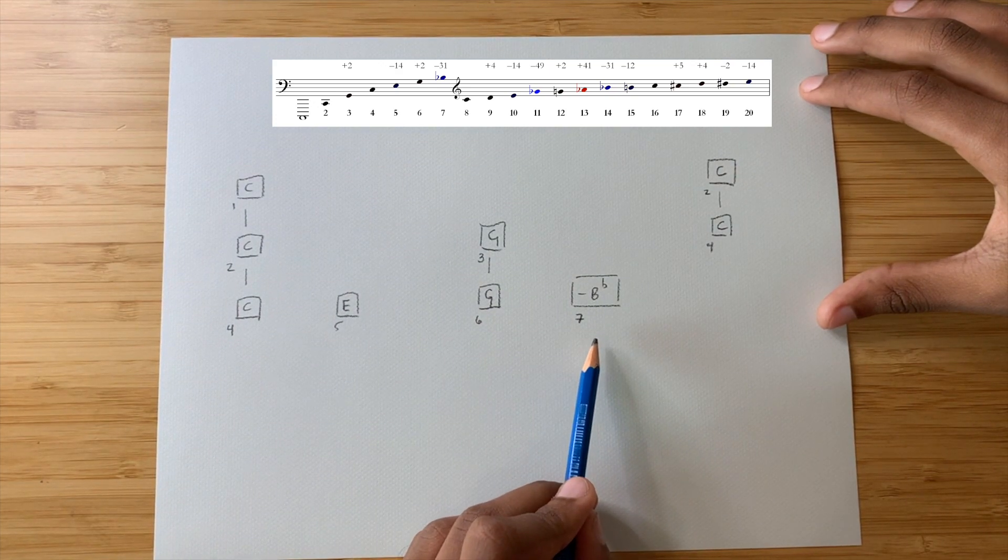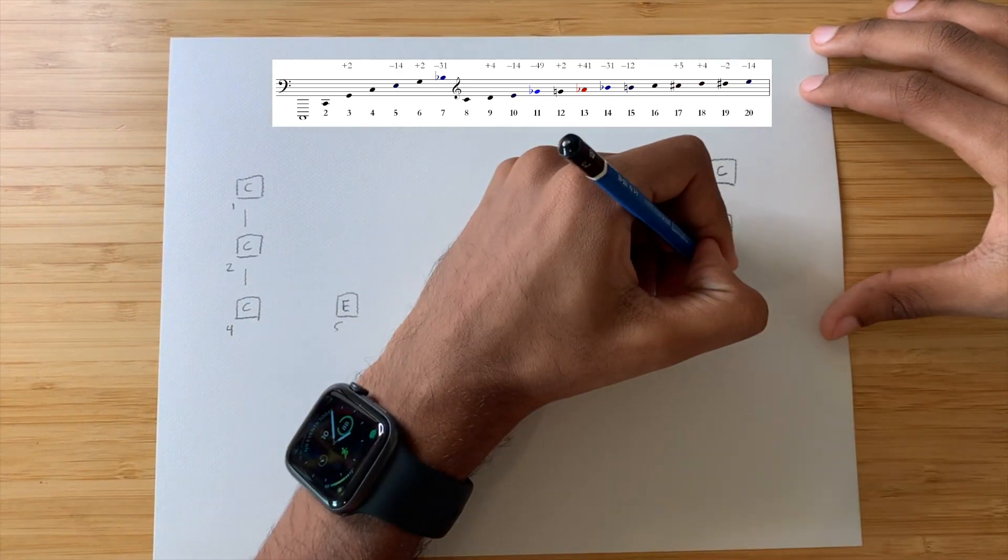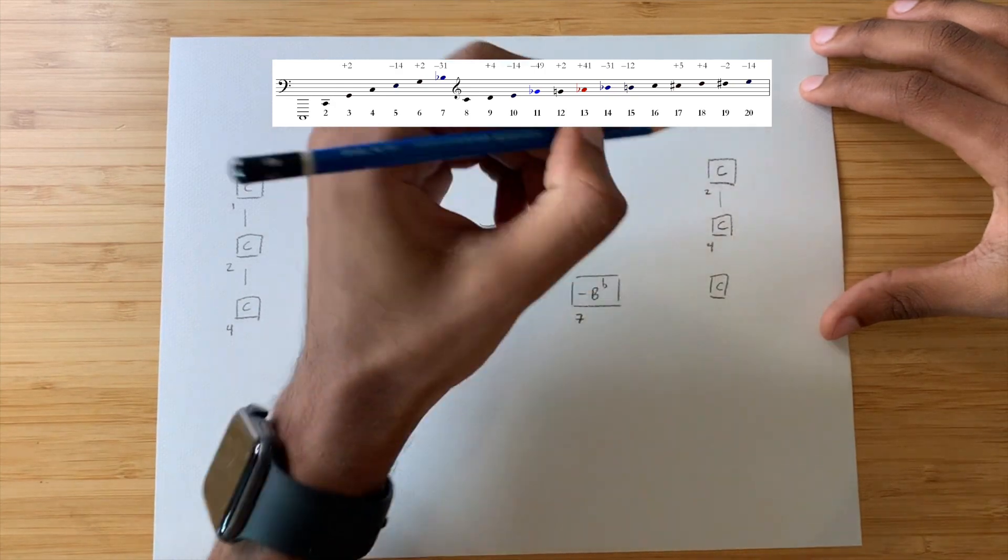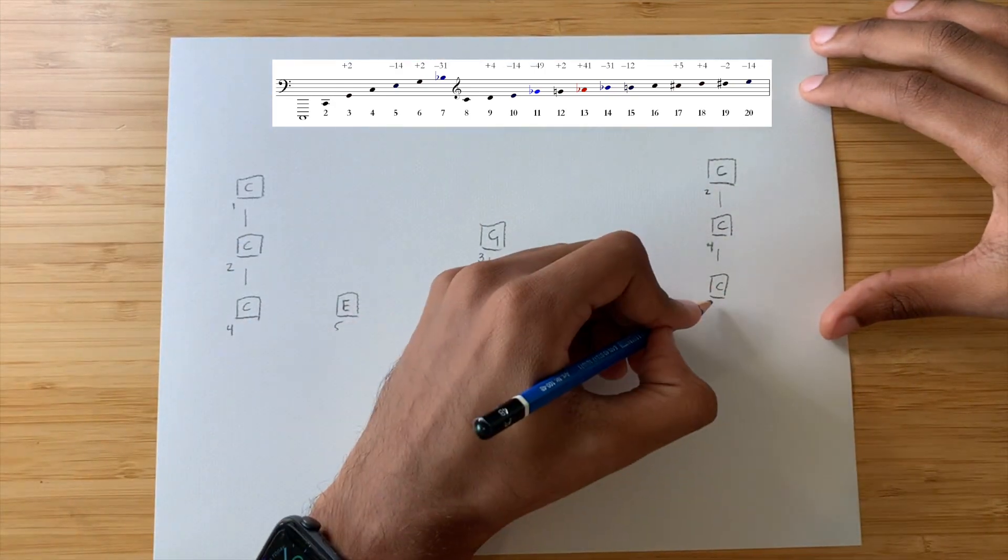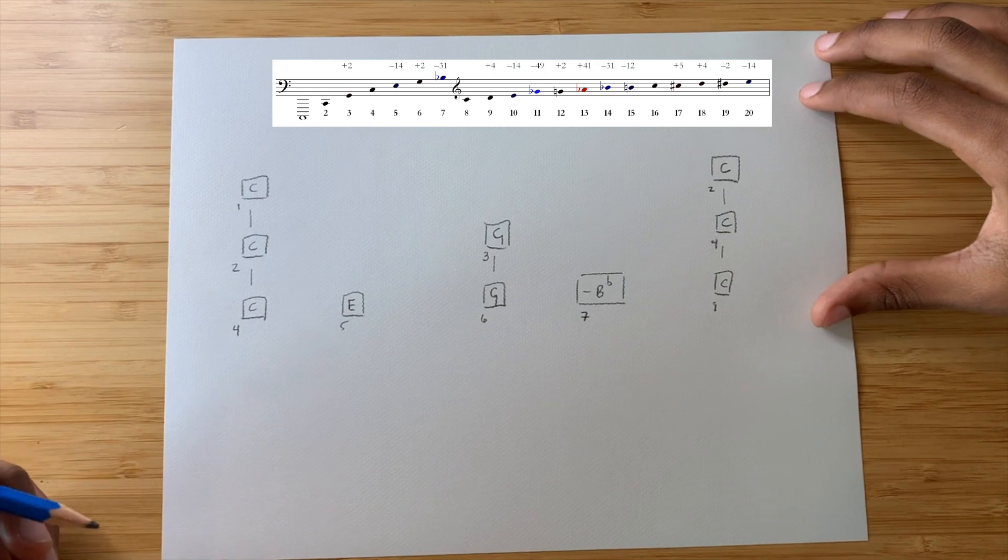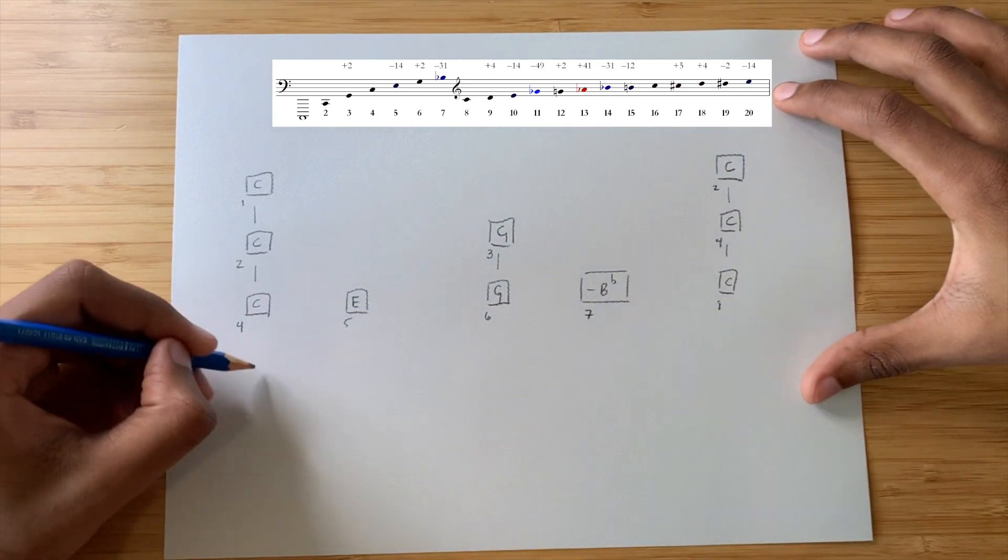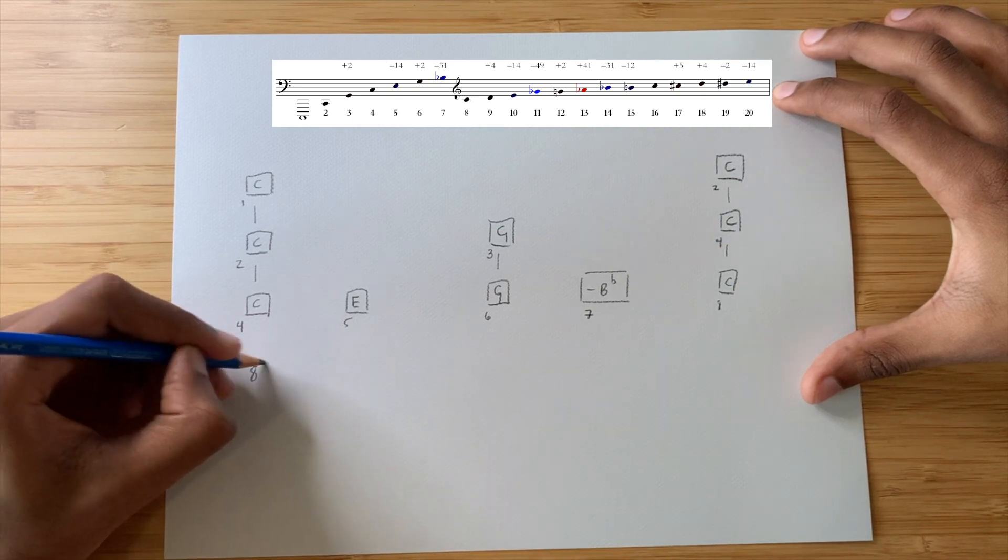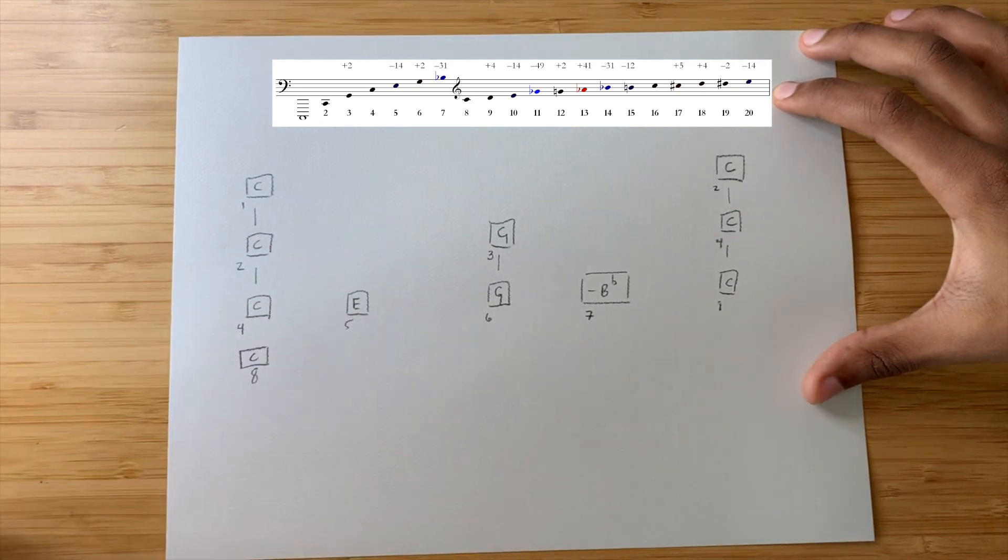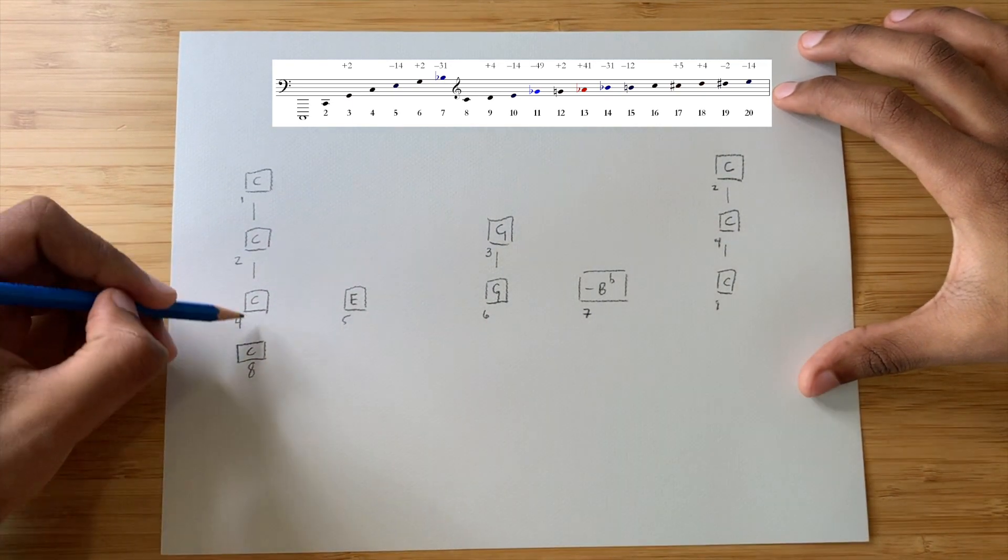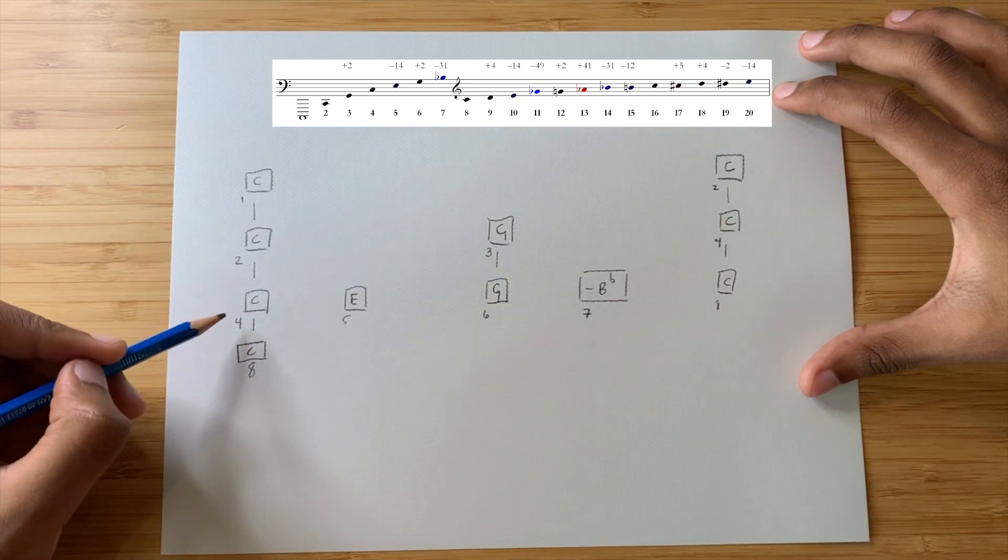And then, overtone eight is another C. Look at that. So, then, of course, the next step, once we're here, we're going to bring that all the way around. And that's overtone eight, right? One octave above overtone four.